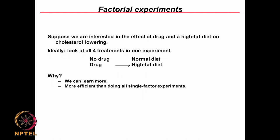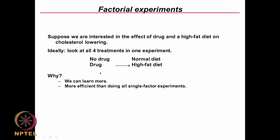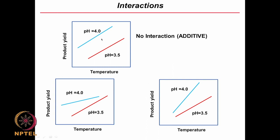By doing this we achieve many things, because we will be able to see interactions. Is there an interaction between drug and diet? Does the person taking a drug with a high fat diet behave very differently compared to normal diet or no drug? We also talked about what interaction is before. Interaction is when 2 variables behave in an additive fashion. For example, looking at product yield as a function of temperature and pH — at a particular pH of 3.5, as temperature increases, product yield may go up, and at another pH the product yield may also go up.